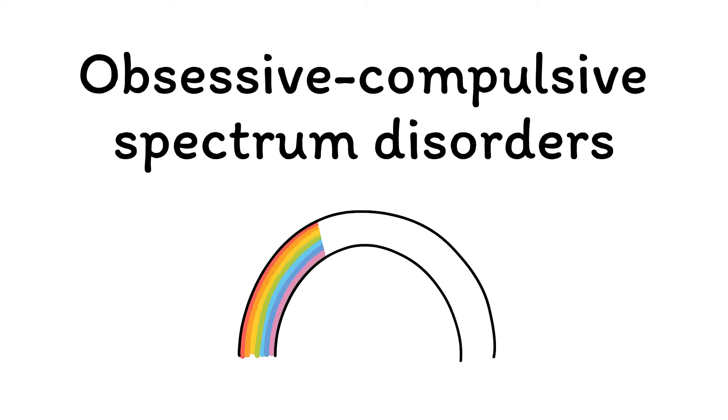These disorders are called obsessive compulsive spectrum disorders, as they bear a strong resemblance to textbook OCD in terms of diagnosis, epidemiology, prognosis, and treatment. In this video, we'll look at the first of these OCD spectrum disorders, which is a condition known as body dysmorphic disorder. If you haven't seen the video on OCD yet, make sure to watch that first — I'll put a link in the description below.